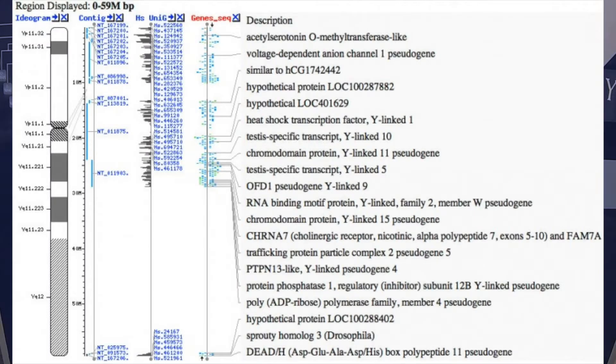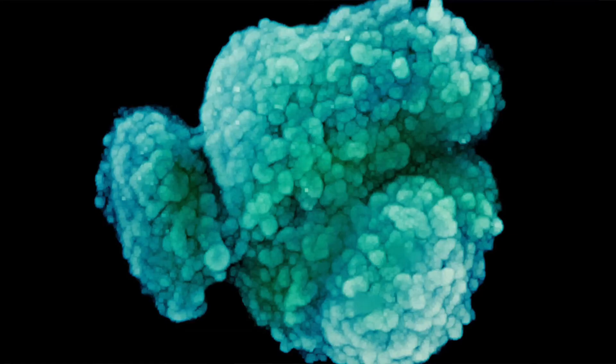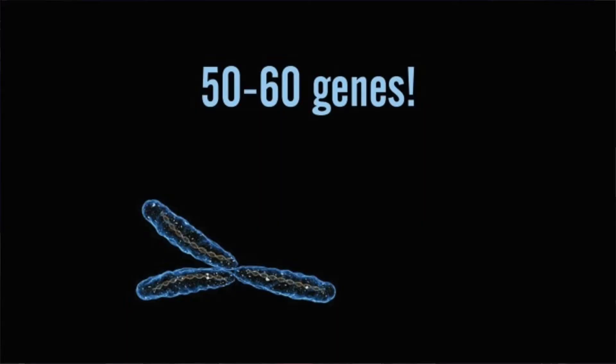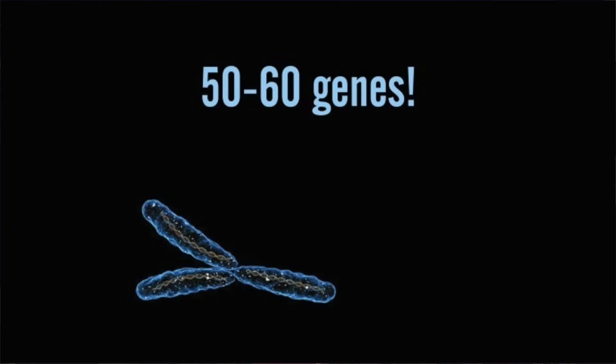The Y chromosome spans around 59 million base pairs and represents almost 2% of the total DNA in a human cell. It's estimated that the Y chromosome contains around 50 to 60 genes with information for making proteins. As only men carry the Y chromosome, these genes tend to be concerned with male sex determination and development.